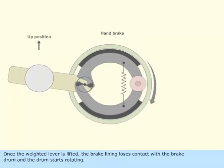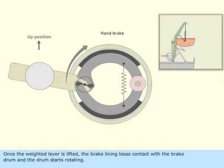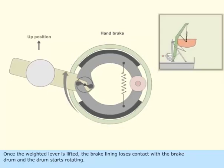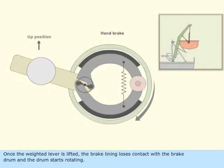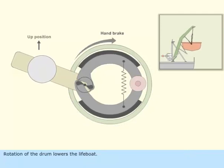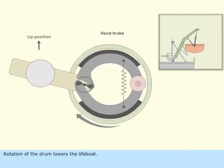Once the weighted lever is lifted, the brake lining loses contact with the brake drum and the drum starts rotating. Rotation of the drum lowers the lifeboat.